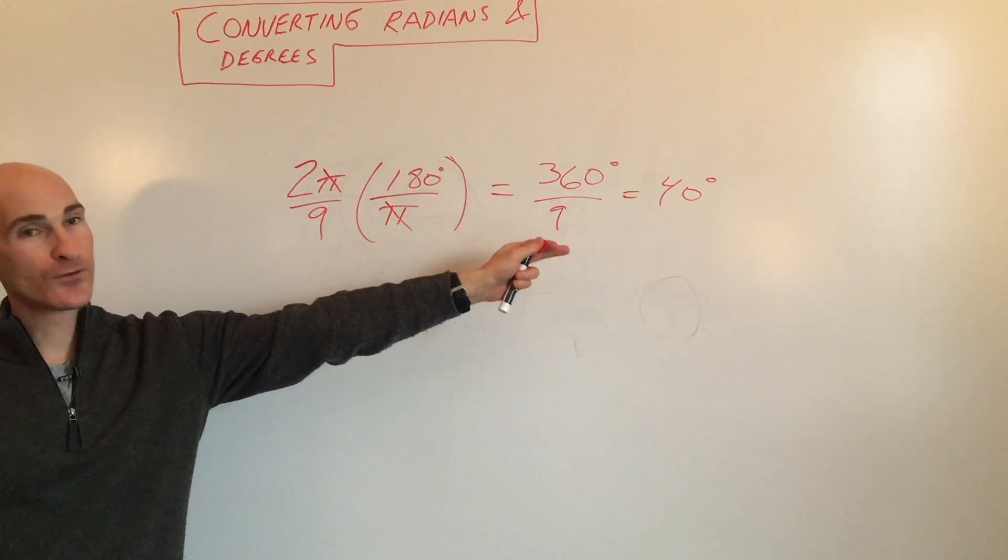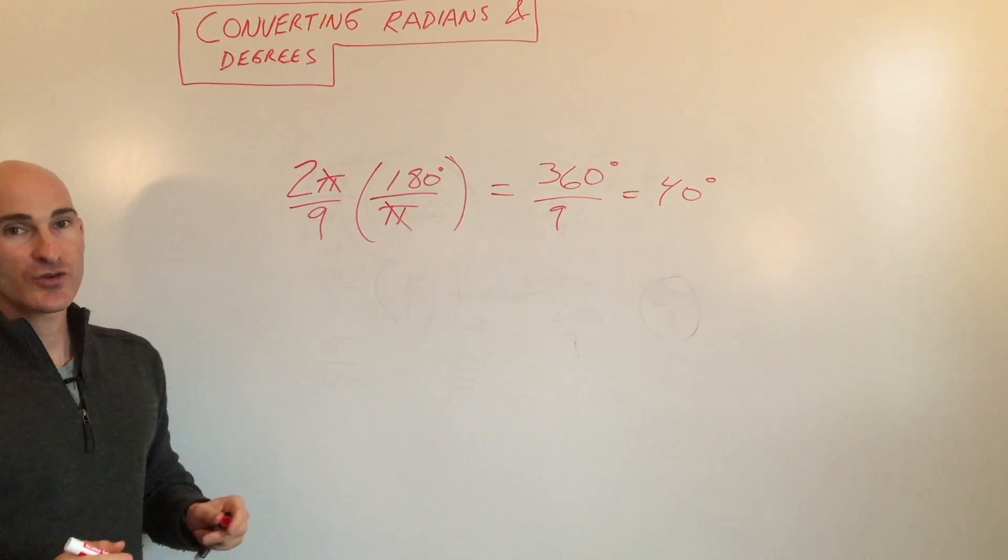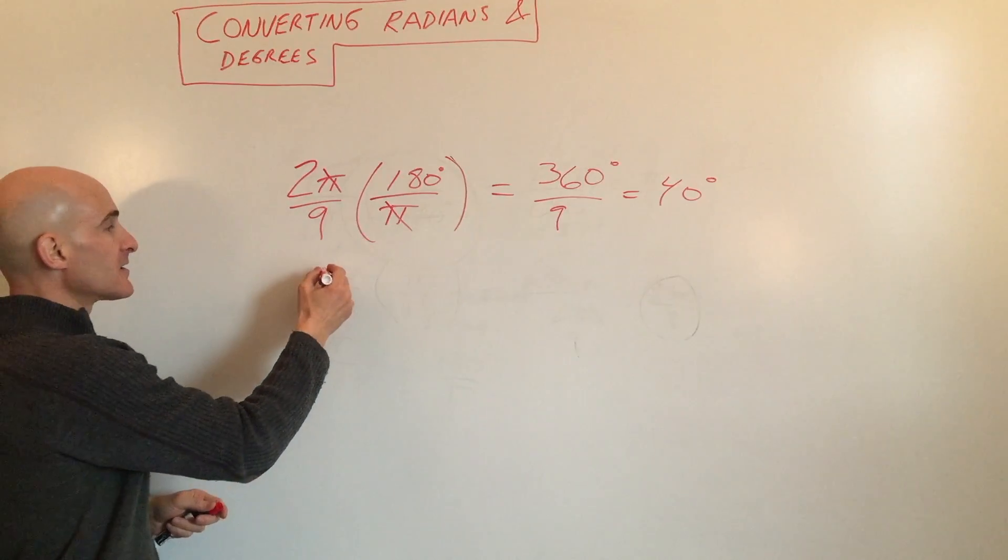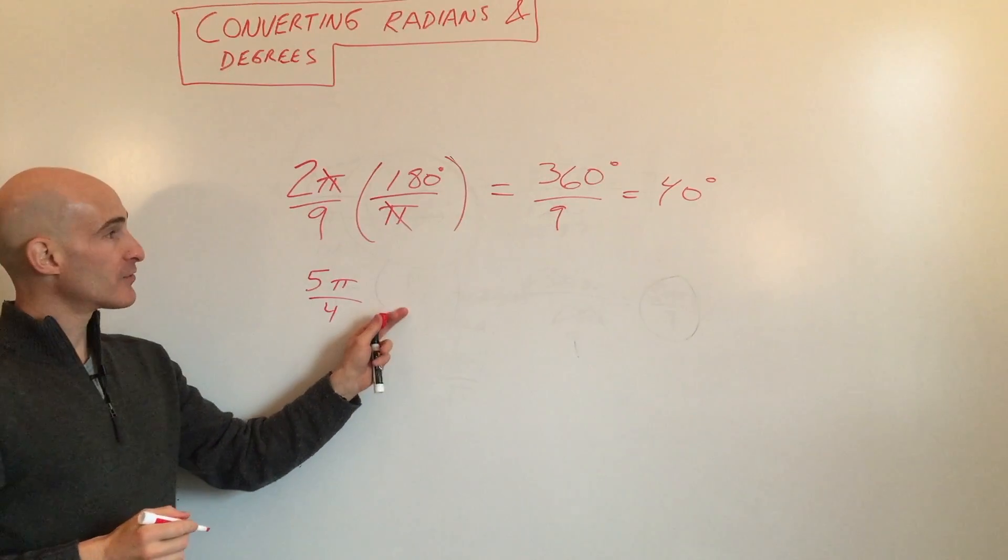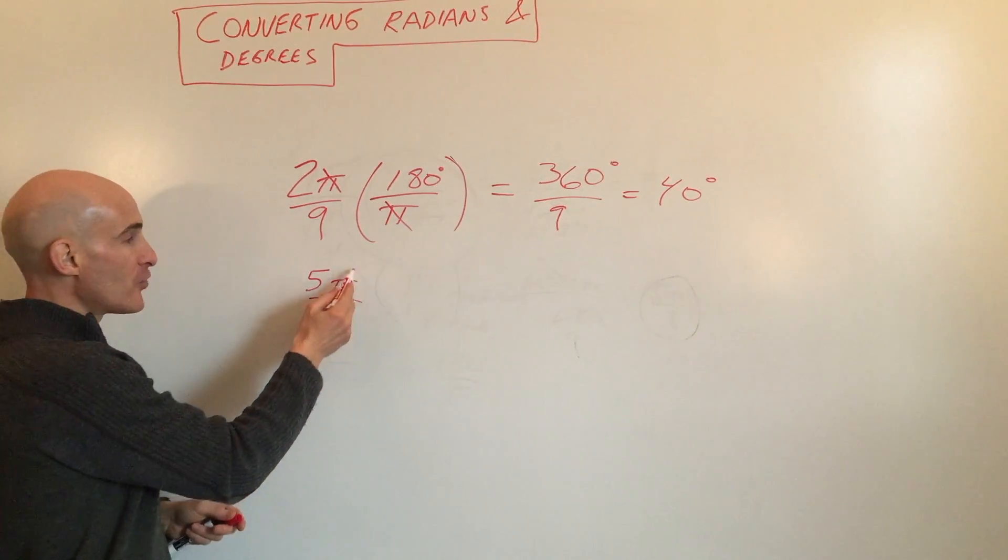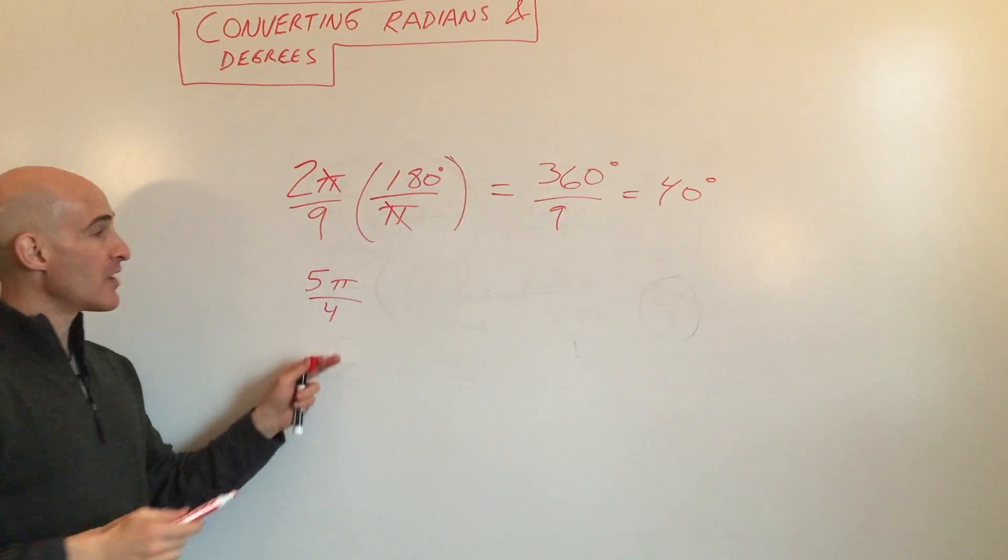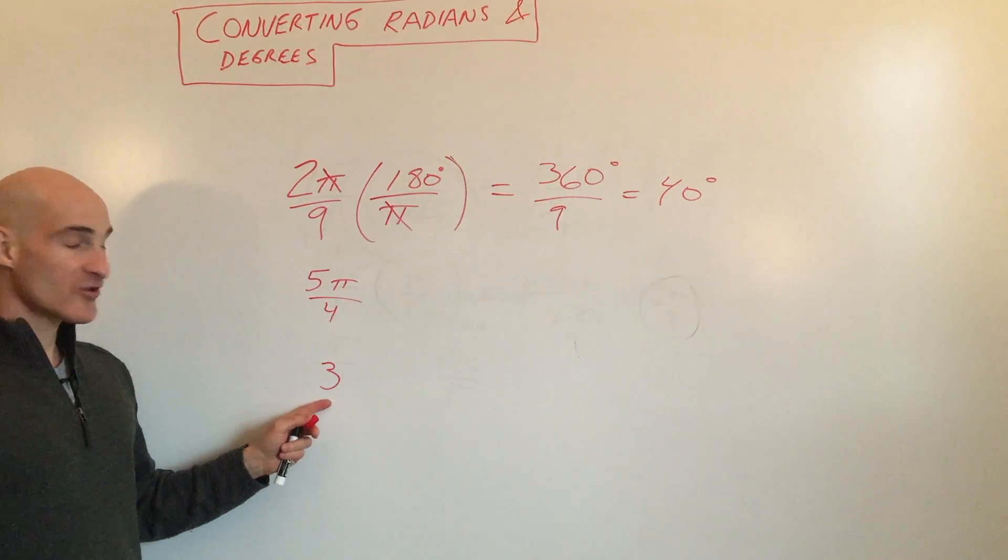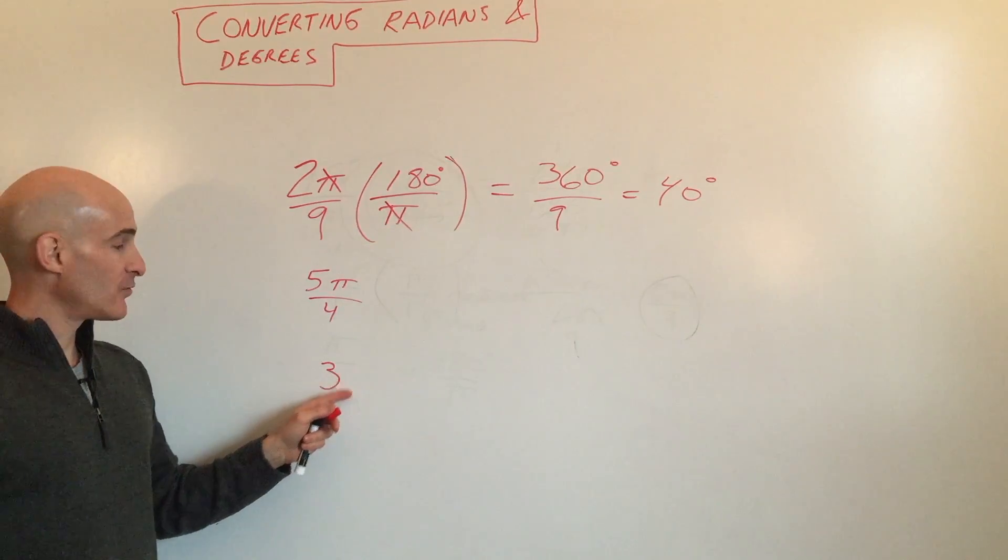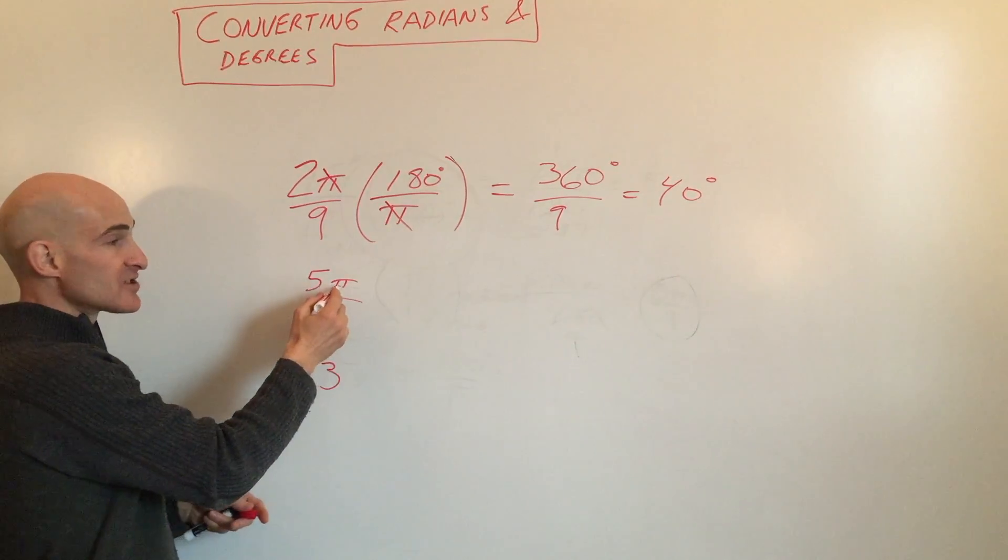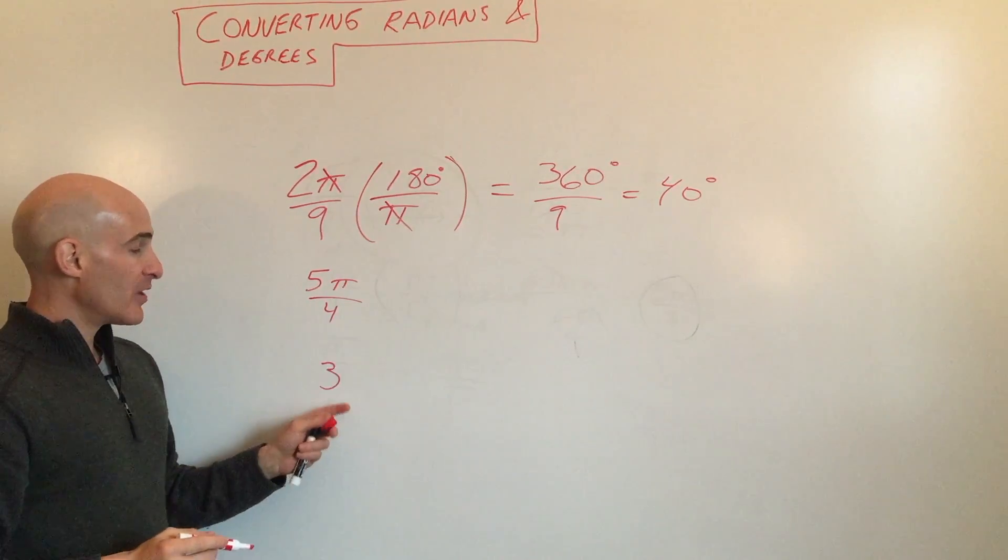Let's do one more example: 5π/4. We want to convert that one to degrees. Just another note: if you don't see a degree symbol, that little circle right here, then you know that it's in radians. If somebody just writes three, it's actually three radians because it doesn't have the degree symbol. A lot of times you'll see π when you see a radian measure, but it doesn't have to have that π.